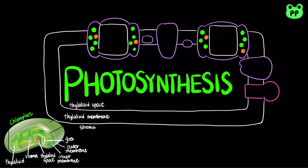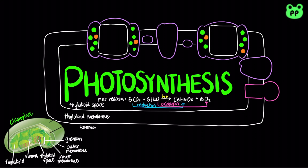Thylakoids are stacked in columns called grana. The net reaction of photosynthesis involves the conversion of 6 carbon dioxide and 6 water molecules to 1 glucose molecule and 6 oxygen molecules. It is an oxidation-reduction reaction in which water is oxidized to oxygen and carbon dioxide is reduced to glucose.